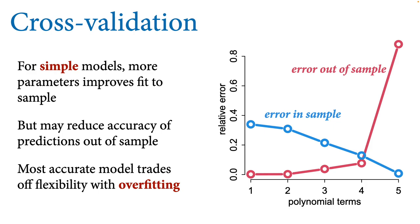For simple models — where parameters all have a direct functional role in computing probability of observations — as you add more parameters you improve the in-sample fit but may do worse out of sample. Flexibility in sample is often a curse out of sample. But there's no Occam's razor here because we must assess accuracy — we want a model most accurate out of sample, and it turns out those models trade off flexibility for accuracy. This phenomenon is called overfitting.